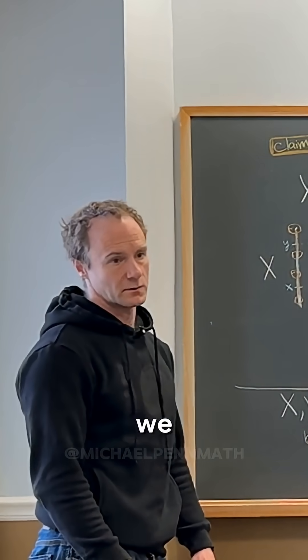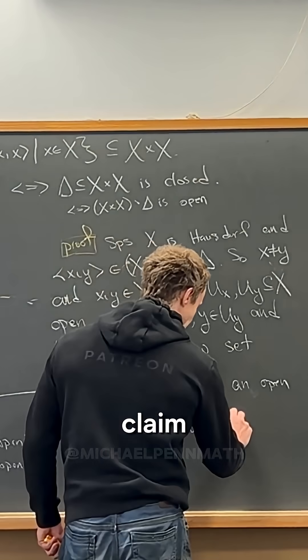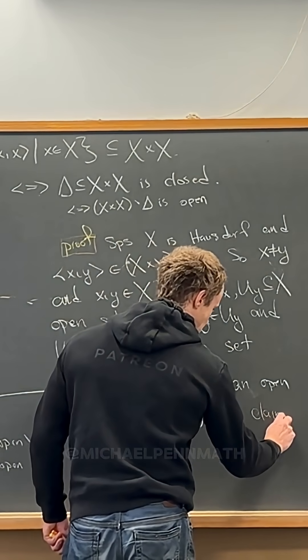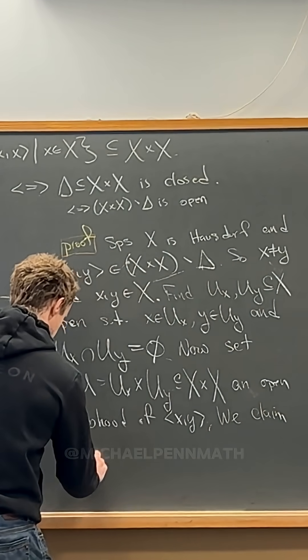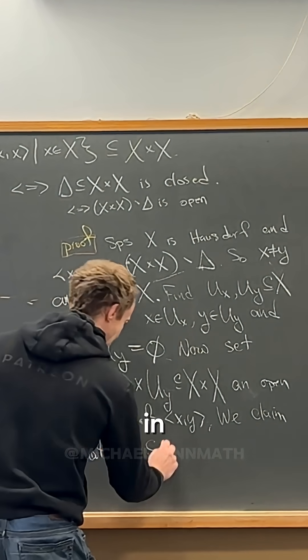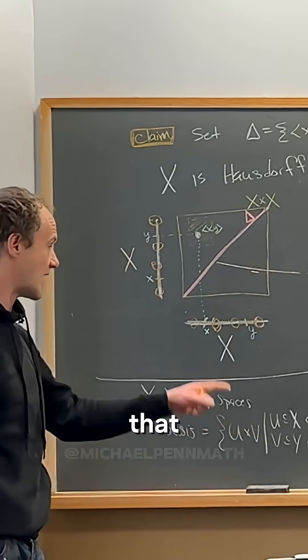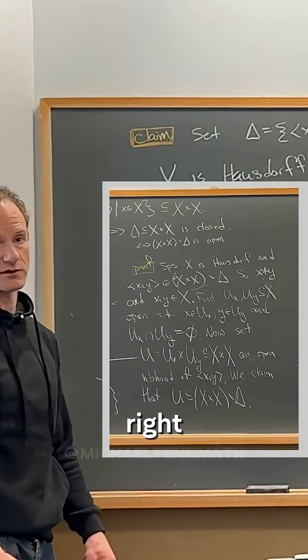It's an open neighborhood of that, right? We could agree with that, right? And now we claim that u is contained in X cross X minus delta. But that will show that X cross X minus delta is open, right?